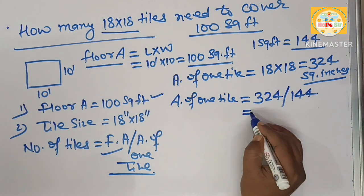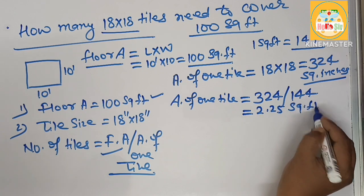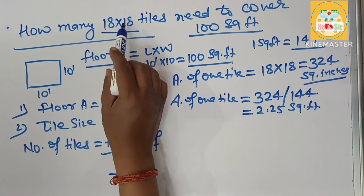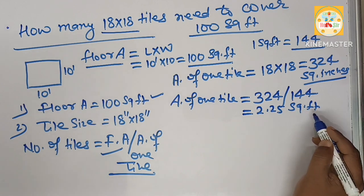This will come to about 2.25 square feet. It means each tile of 18 inch by 18 inch contains 2.25 square foot area.